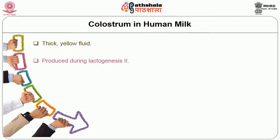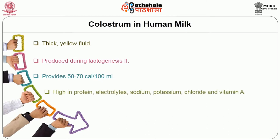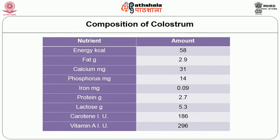The process of milk secretion and synthesis is known as lactogenesis. Lactogenesis 2 occurs 2 to 3 days after birth, and colostrum provides about 58 to 70 calories per 100 ml. It is high in protein, electrolytes — sodium, potassium, chloride — and vitamin A. These are the nutrients present in maximum amounts in colostrum. Colostrum is low in fat and carbohydrate, and it has a lactobacillus bifidus factor. The table clearly indicates the composition of colostrum.